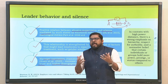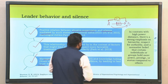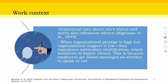In contexts with high power distance, there is a strong emphasis on hierarchy, respect for authority, and the normative belief that certain individuals or groups hold more power, prestige or status compared to others. When such gradation and differentiation exist, people tend to remain silent. This is what we can understand from leader behavior and silence.